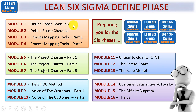Here in the Define Phase are the 16 modules that we will be going through. Module one is the Define Phase overview, then we'll look at the checklist, then process mapping tools, moving on to the Charter, something called the SIPOC method, the all-important voice of the customer, critical to quality requirements otherwise known as CTQ, the Pareto chart, the Kano model, customer satisfaction and loyalty, the affinity diagram, and finishing off with the Five S's — which introduce the lean part of Lean Six Sigma used throughout the DMAIC phases.